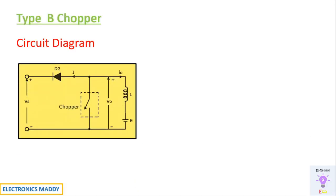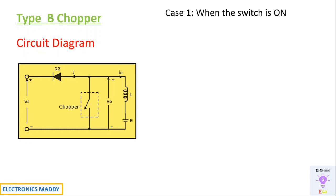This is the circuit diagram of a Type B chopper. It basically requires an EMF — also called a battery load — so if you don't use E you will not get the desired operation. Let us understand the circuit configuration by assuming two cases: when the switch is on and when the switch is off.